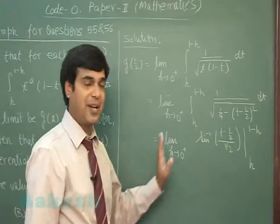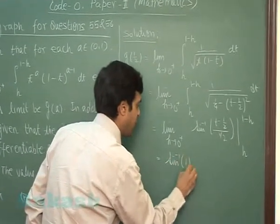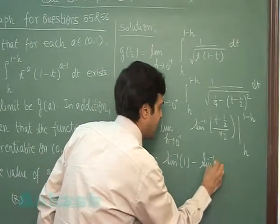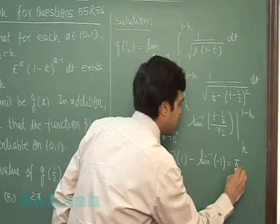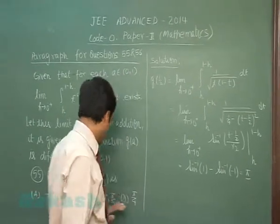Sine inverse of (t-1/2)/(1/2) for the limit h to 1-h. Substitute the limit and simplify to obtain the term as sin⁻¹(1) - sin⁻¹(-1).